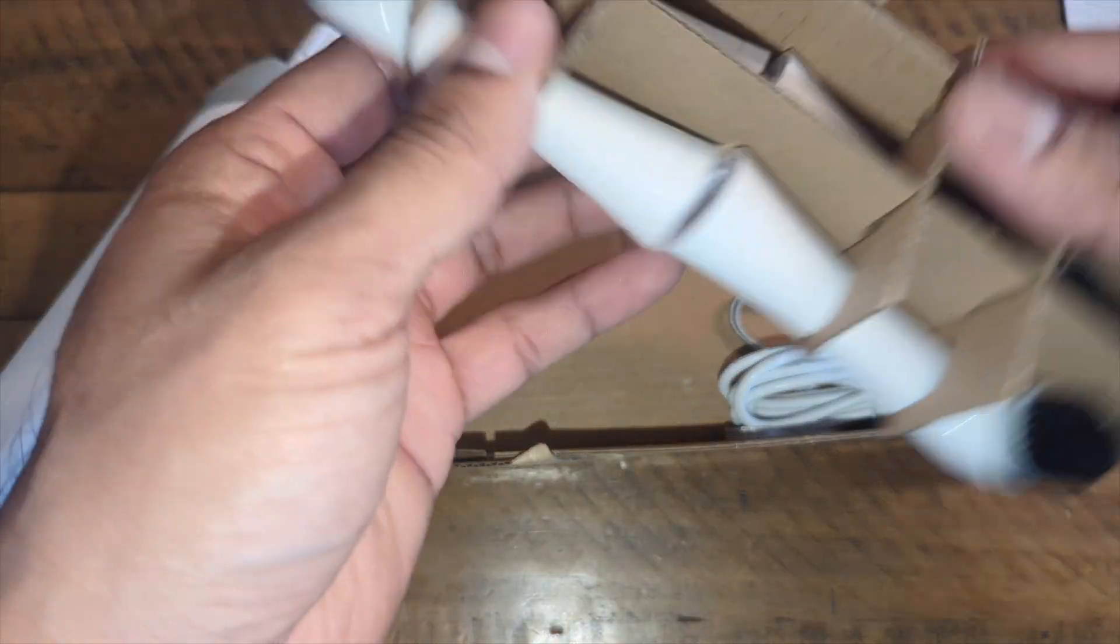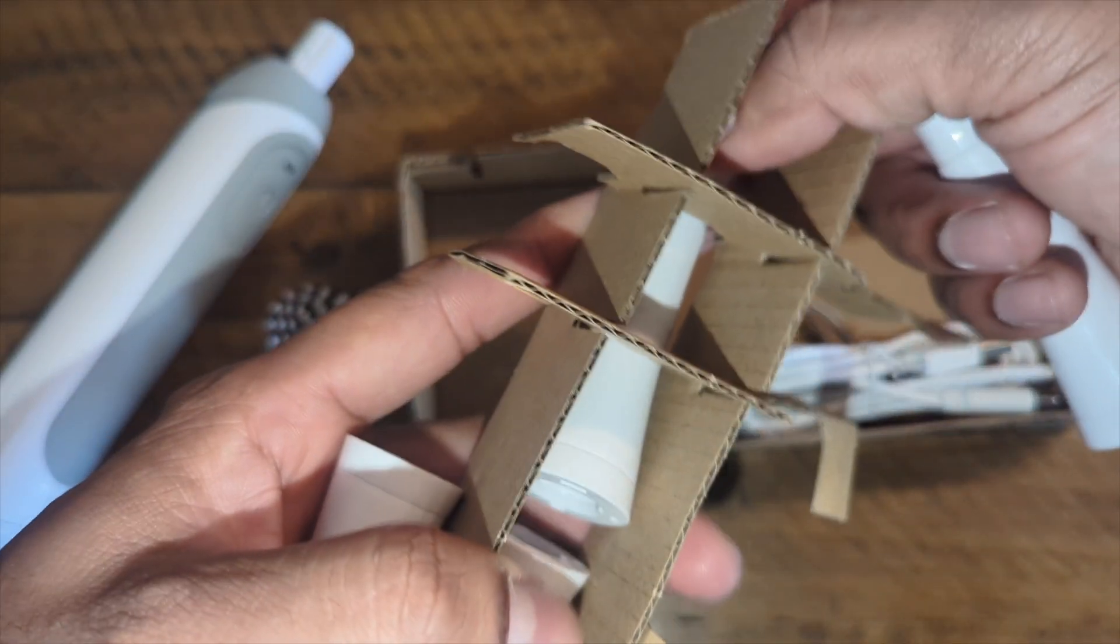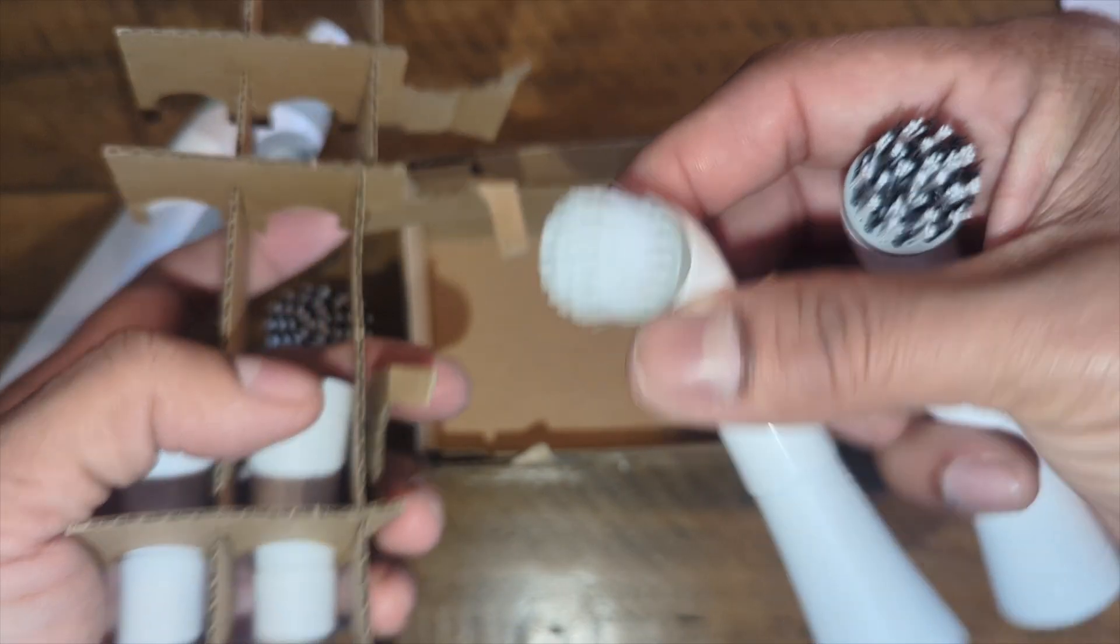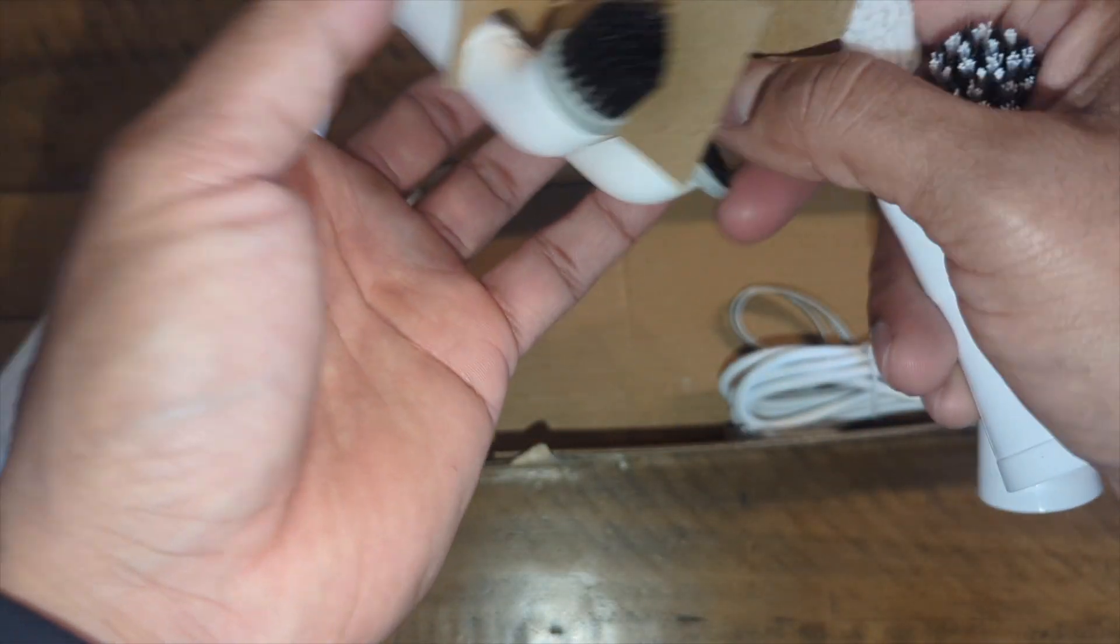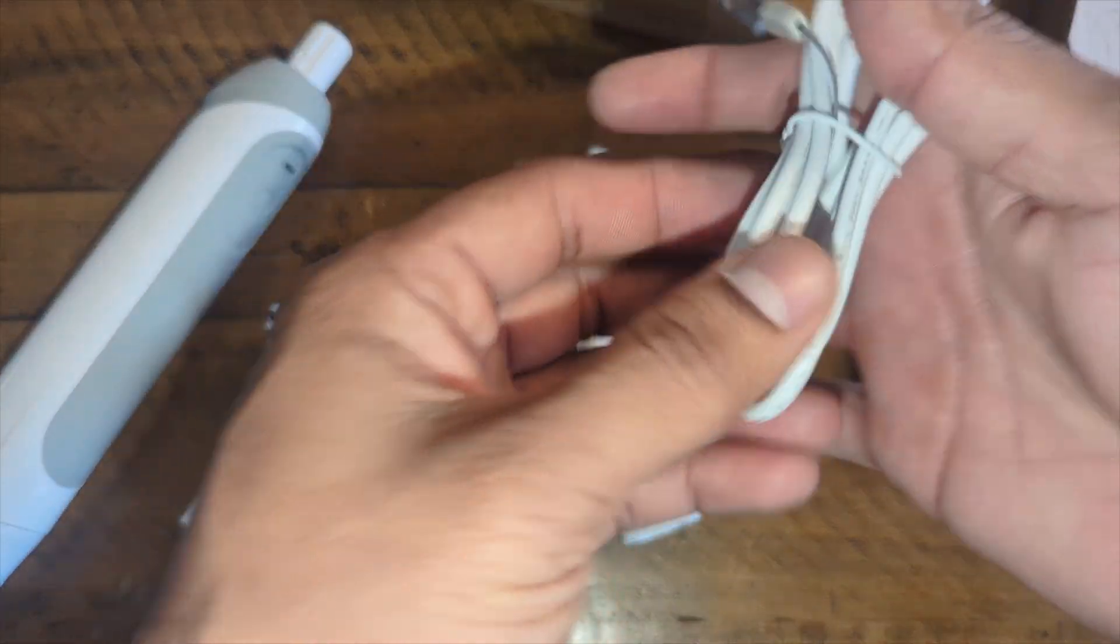Use it on bathroom sinks, bathroom tiles, window corners, doors, floors, pet bowls - whatever you want to clean. This has over five different pieces and it comes with a charger right here.